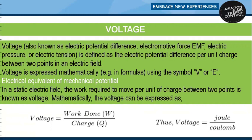In a static electric field, the work required to move per unit of charge between two points is known as voltage. Mathematically, voltage is expressed as: V = W / Q, where W is work done in joules and Q is charge in coulombs. So voltage equals joules divided by coulombs — this is the SI unit for voltage.